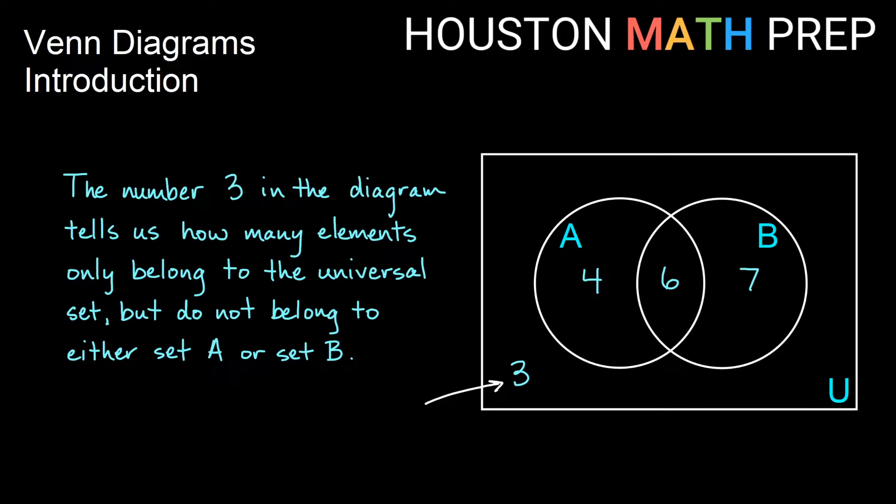Our number three out here in the diagram tells us how many elements belong only to the universal set, but they don't belong to either set A or set B. They're outside of both circles, any circles that we have. So these three elements don't belong to A or to B. They're just in the universal set.